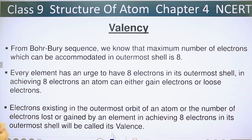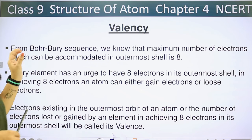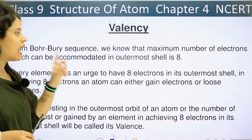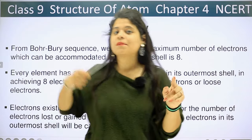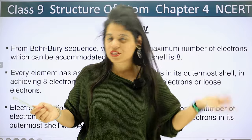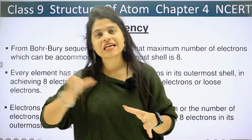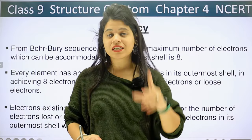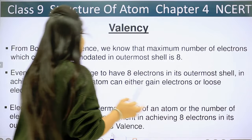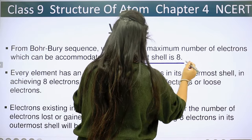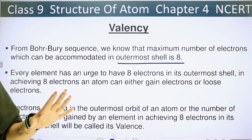From Bohr's sequence, we know that the maximum number of electrons which can be accommodated in the outermost shell is 8. If you are watching this topic and you haven't seen the previous video, please go and watch that video because we discussed how the electrons are distributed and arranged. So it will be easy to understand.